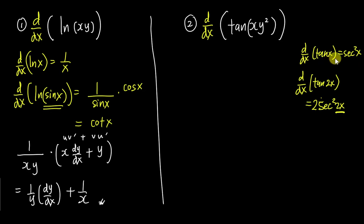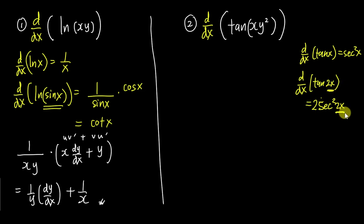You might wonder why we don't differentiate the x one more time in the simpler case — actually we do, but differentiating x gives 1, so there's an invisible 1 in front. When we differentiate trigonometry, we always copy the angle because we cannot simply change it. So the angle 2x remains 2x, and we differentiate the angle and multiply it at the front.